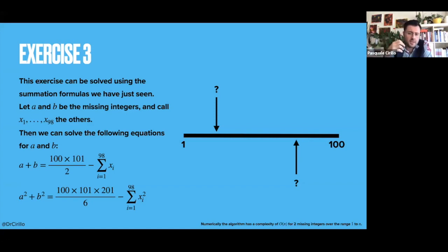So if I take 100 times 101 divided by 2, and I subtract the sum of all the other integers that I know, x1 to x98, then I already have one equation.